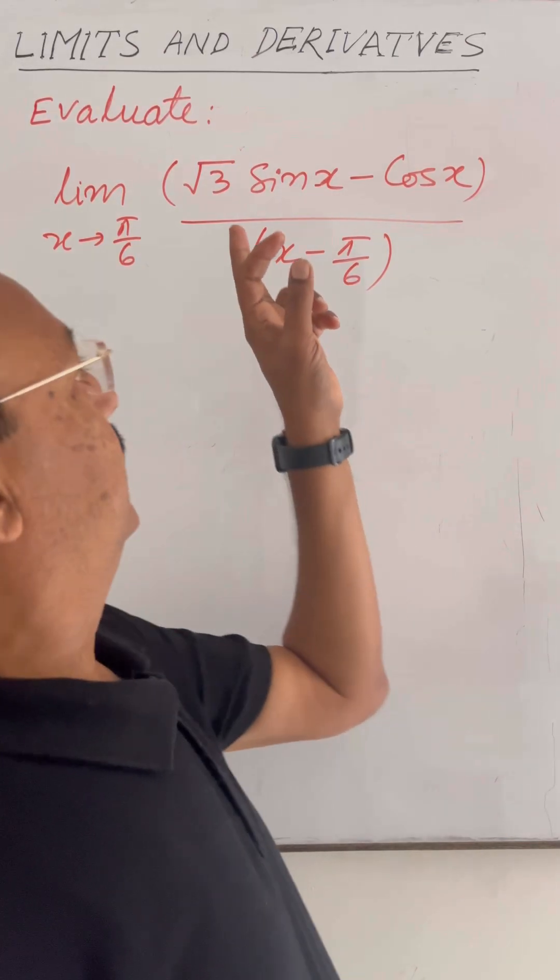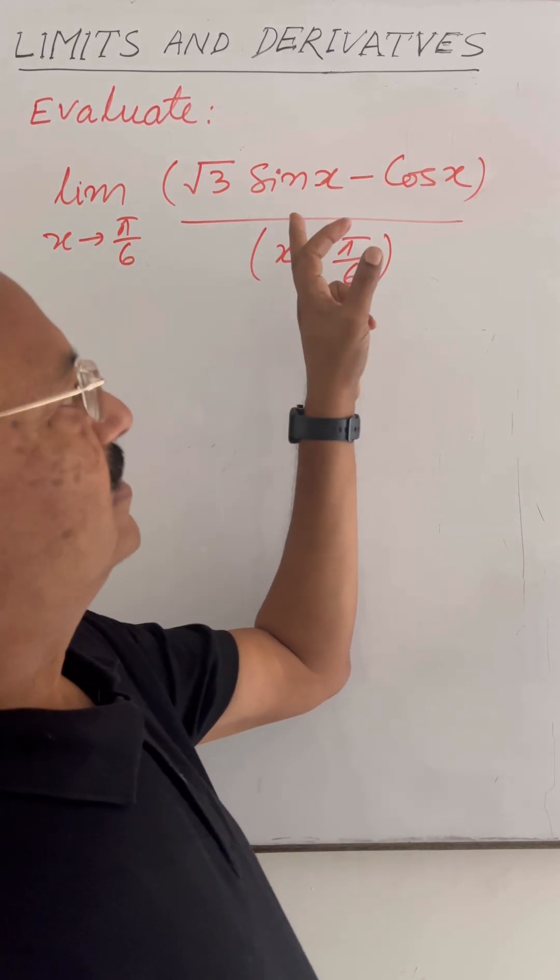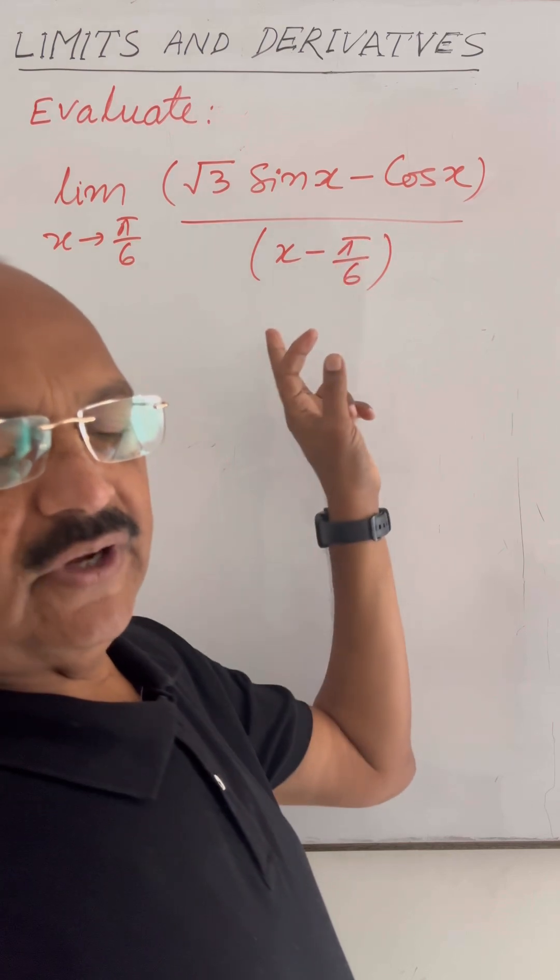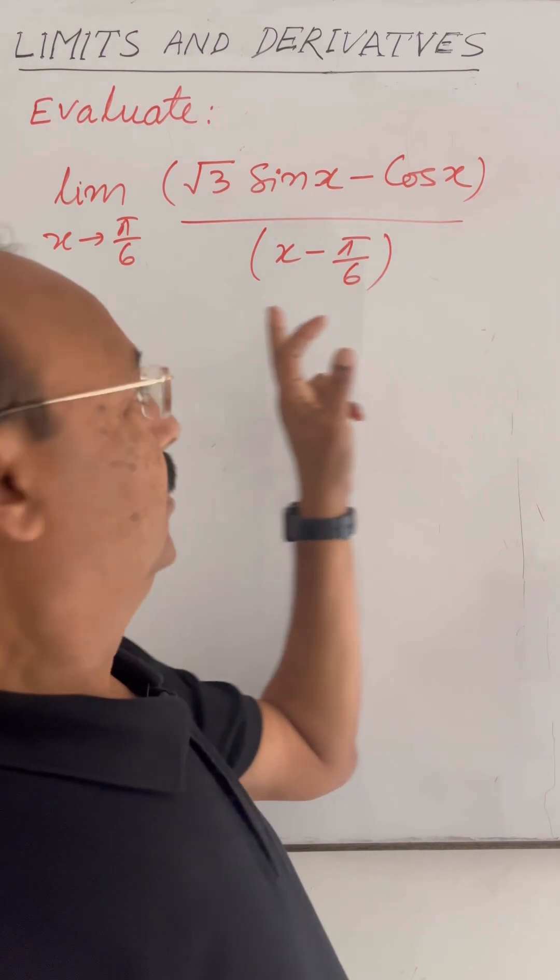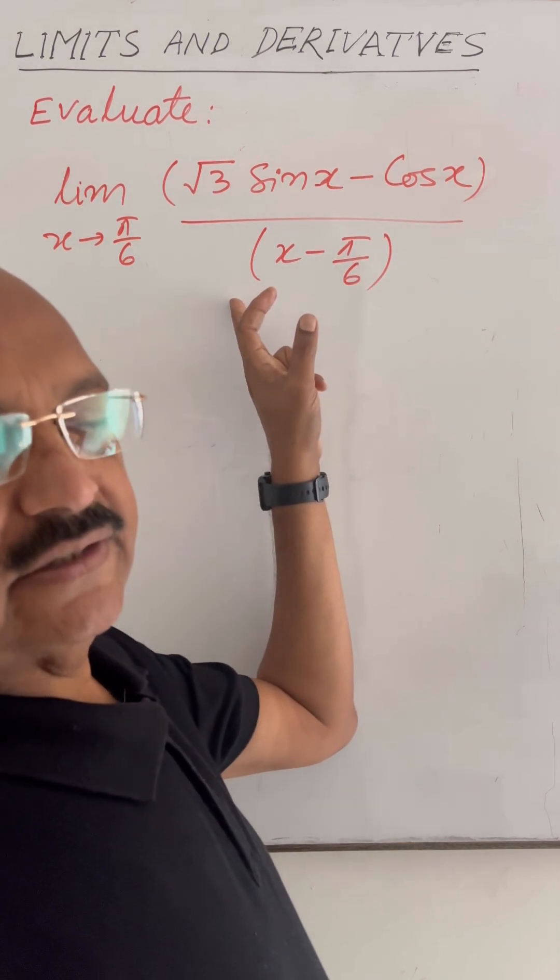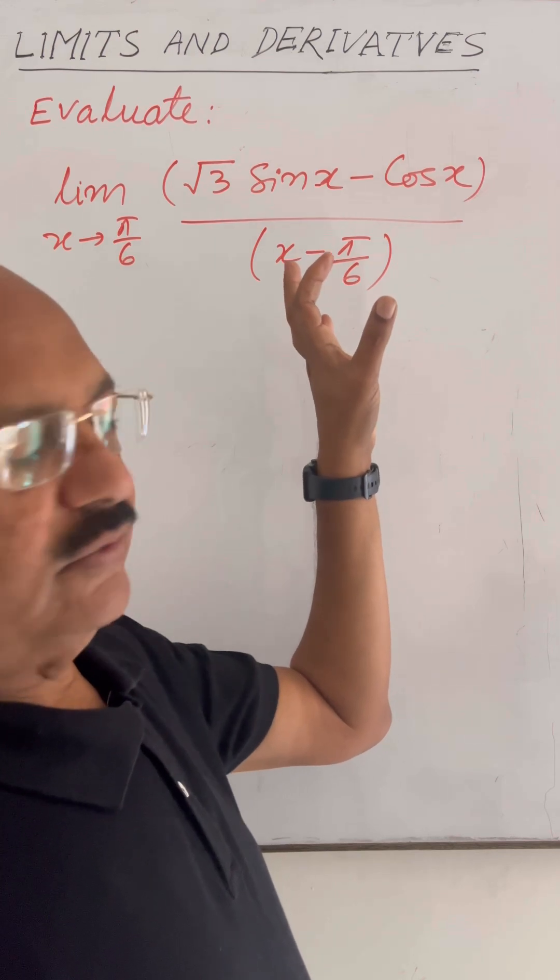The question is evaluate the limit of the function √3 sin x minus cos x upon x minus π by 6 when x tends to π by 6. Very interesting and important question.